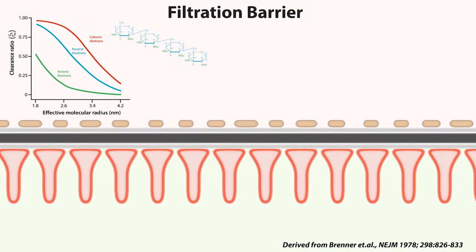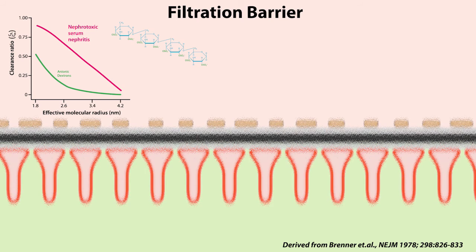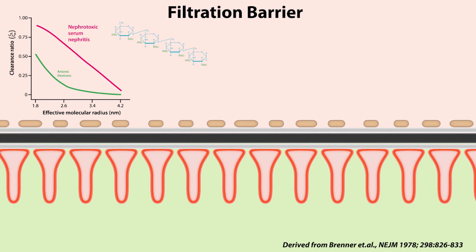To prove that charge-based perm selectivity was due to negatively charged glycoproteins in the podocyte foot processes and glomerular basement membrane, perm selectivity of negatively charged dextran was measured before and after inducing nephrotoxic serum nephritis, which damages the filtration barrier and inhibits expression of these negatively charged proteoglycans. Results from this classic experiment confirmed that negatively charged proteoglycans in the glomerular basement membrane and podocyte foot processes play a central role in restricting passage of molecules based on size and electric charge.